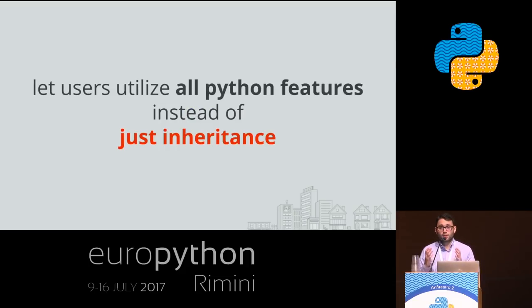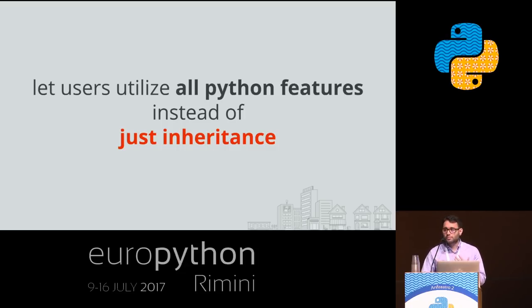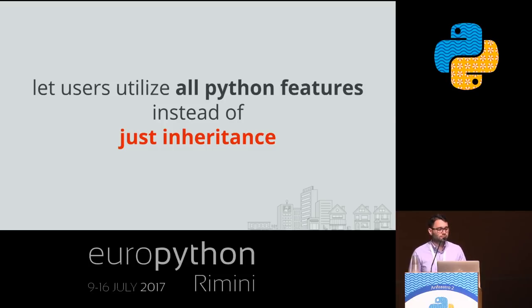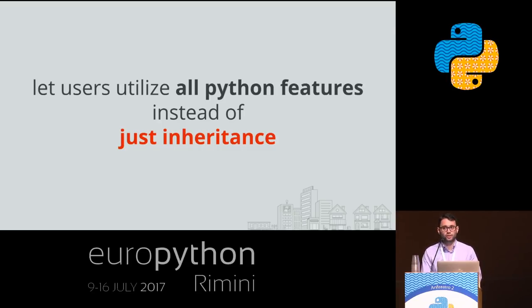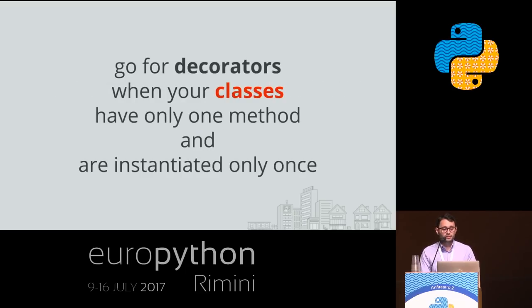I'd like to start from the very end of the talk with the main two takeaways. They might make little sense to you at the moment, but keep them in mind — maybe at the end there will be cool ideas you can use in your daily job. The first one is: let users utilize all Python features instead of just inheritance. The second one is: go for decorators when your classes have only one method and are instantiated only once.